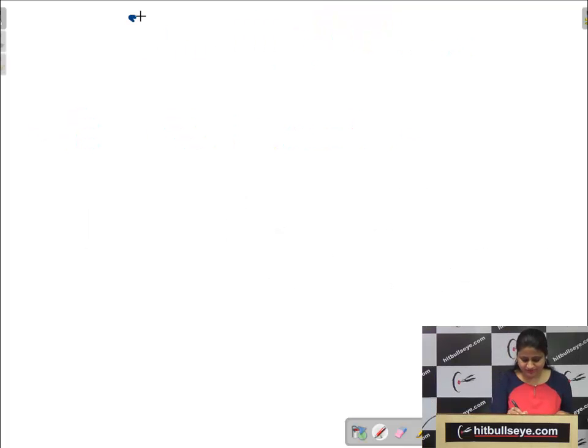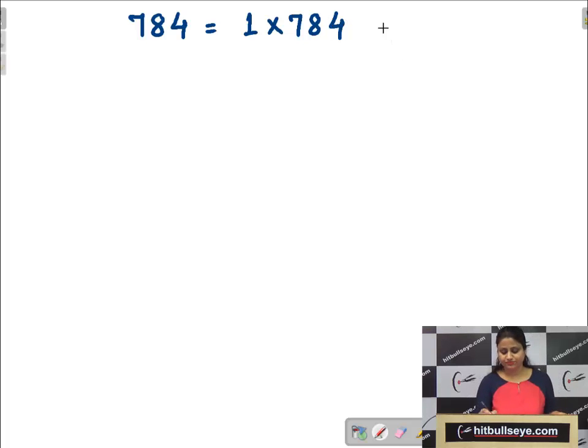What was the area given? It was 784. So if we write a possible rectangle with integral sides that is 1 into 784, what is the perimeter here? That is twice of 1 plus 784.